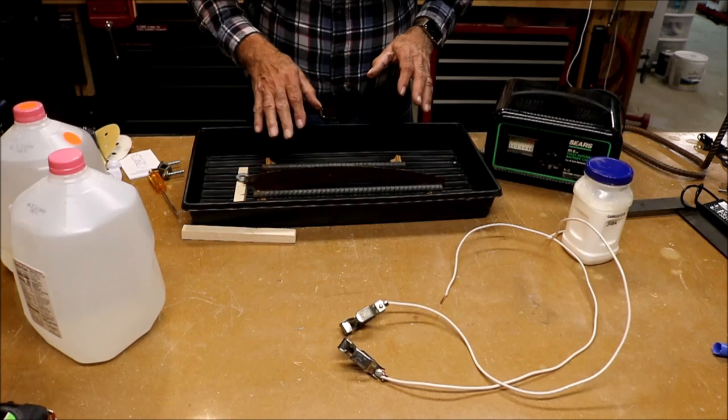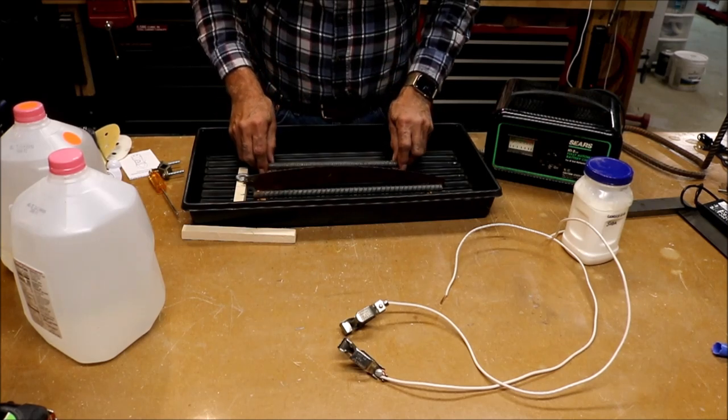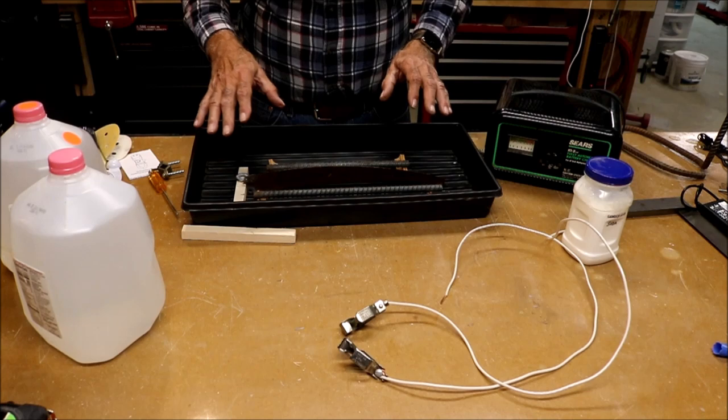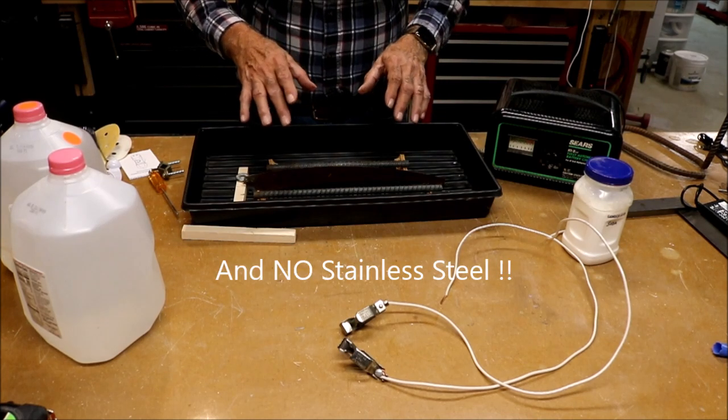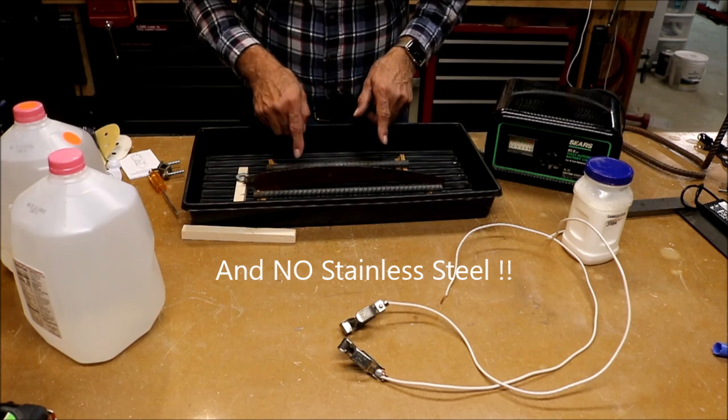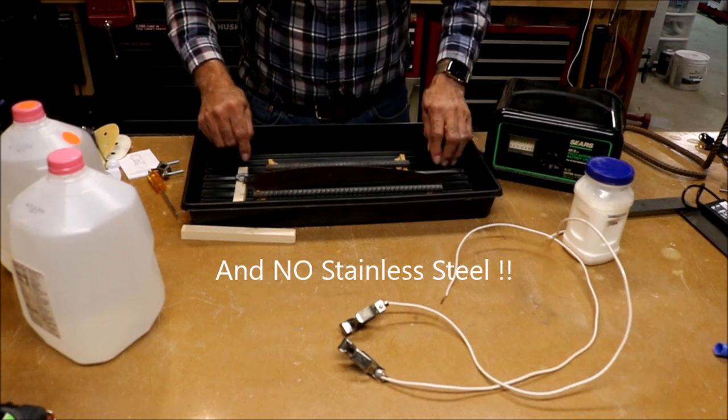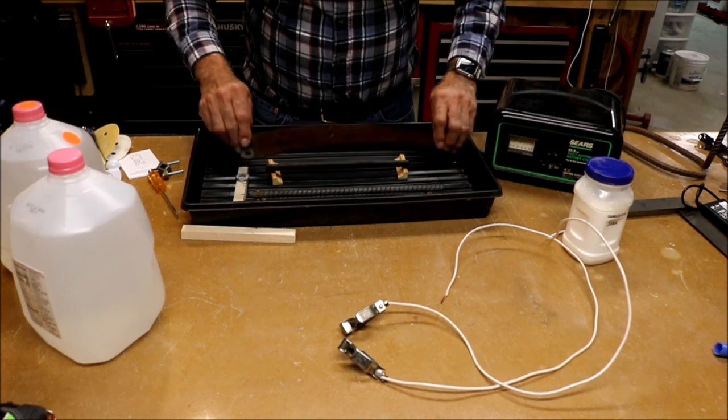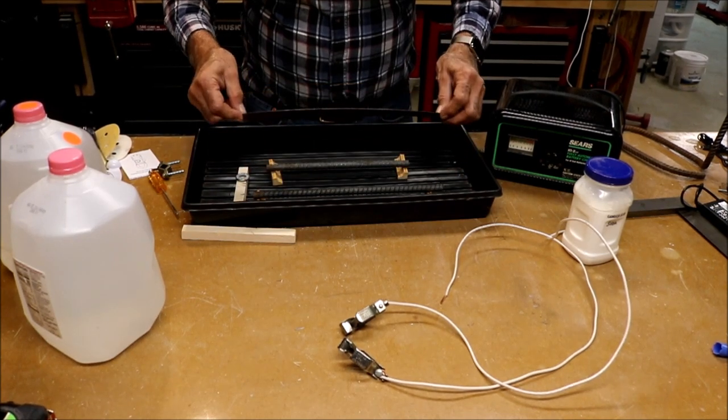You should make sure that it doesn't have any coating on it or it's not painted or galvanized because it needs to dissolve and sacrifice itself to get rid of the rust. And then in here we have the part you're going to remove the rust from.